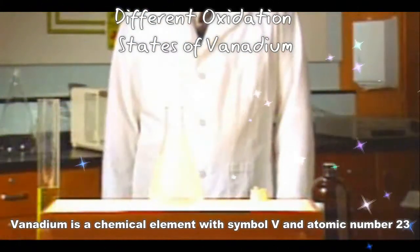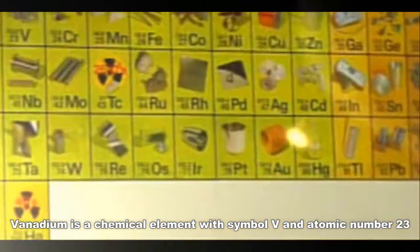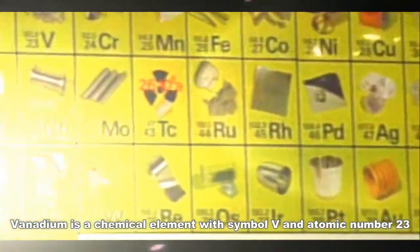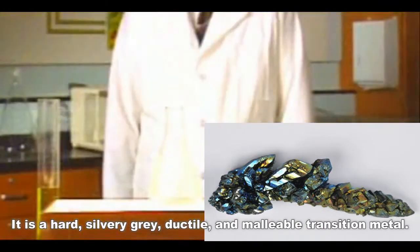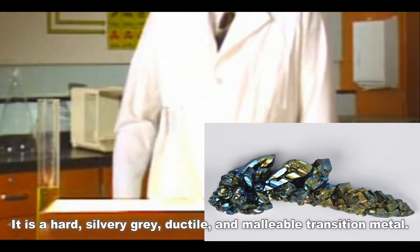Vanadium is an interesting transition element we find in the middle of the periodic table. Vanadium can go through multiple oxidation states. Its ions can have different charges and we'd like to show you that.